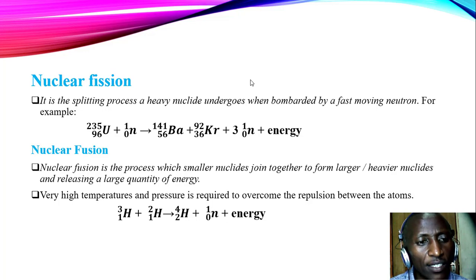Next, we look at nuclear fission and nuclear fusion. In nuclear fission, this is a splitting process whereby a heavy nuclei undergoes when bombarded by a fast-moving neutron. For example, in uranium-235, you bombarded with a fast-moving neutron and we generate barium-56 plus krypton and 3 neutrons plus a lot of energy. You find that due to the bonding, the uranium disintegrates into relatively stable nucleates, releasing a lot of energy and some radiations.